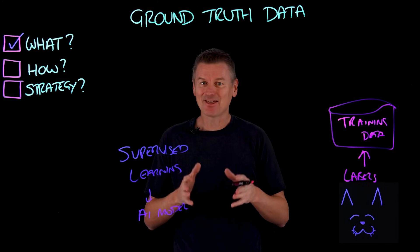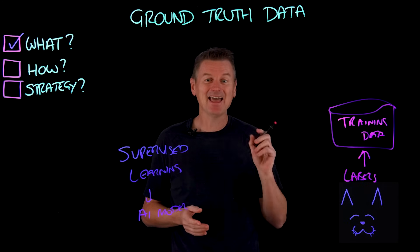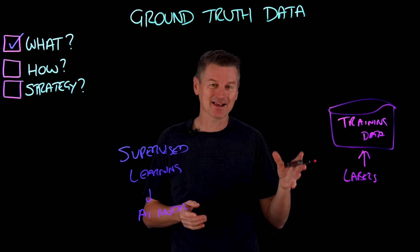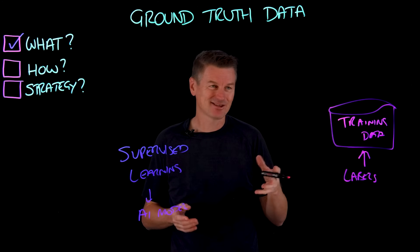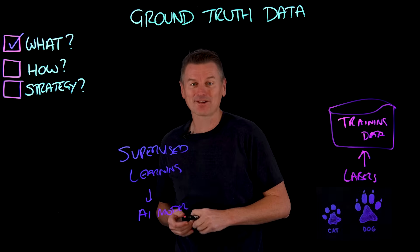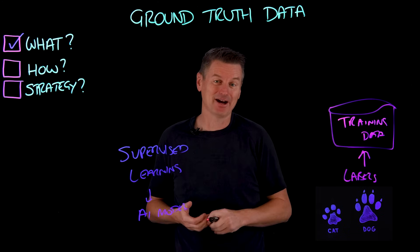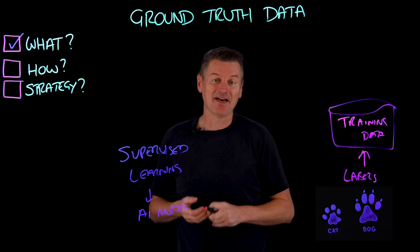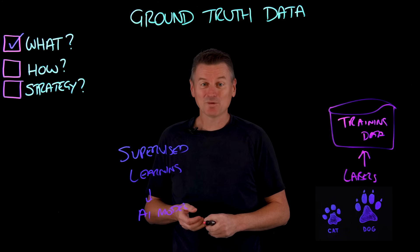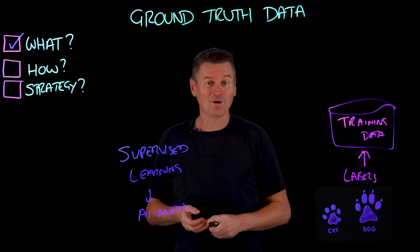And that's why it's so important that the ground truth data is actually truthful, because if the labels are incorrect — such as incorrectly labeling images of dog paws as cat paws — the model fails to learn the correct patterns, and that can lead to false predictions, which would be a paw-ling.